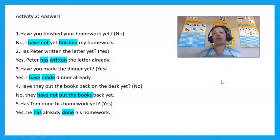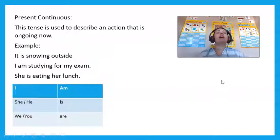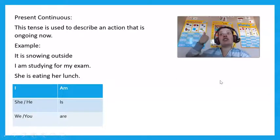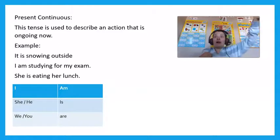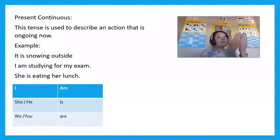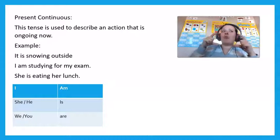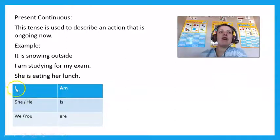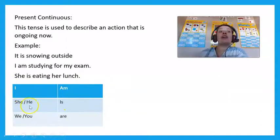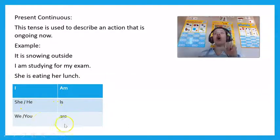Good job, I'm so proud of you. So then we get present continuous tense. This tense is used to describe an action that is ongoing now. For example: 'It is snowing outside,' 'I am studying for my exam,' or 'she is eating lunch.' Remember, with present continuous tense: when you have 'I', it will always be 'am'; when it's 'she' or 'he', it's 'is'; when it's 'we' or 'you', it's 'are.'